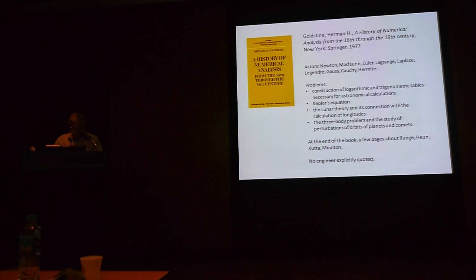A few recent books have been devoted to the history of numerical analysis. Goldstein was a pioneer. His work focuses primarily on identifying numerical methods encountered in the works of some great mathematicians between Newton and Hermite. The main problems are the construction of logarithmic and trigonometric tables necessary for astronomical calculations, Kepler's equations, the lunar theory and its connection with the calculation of longitude, the three-body problem.